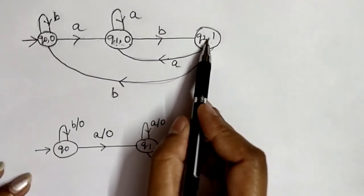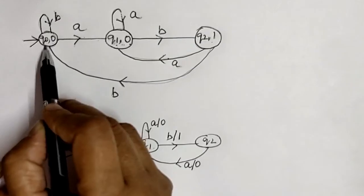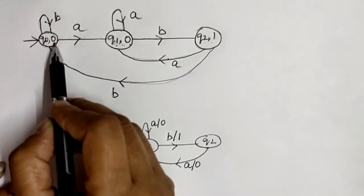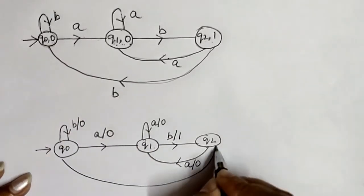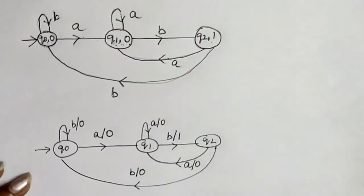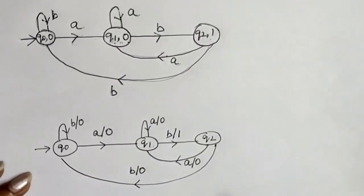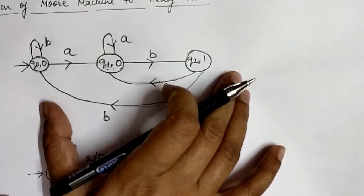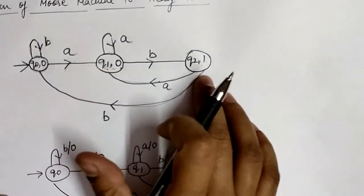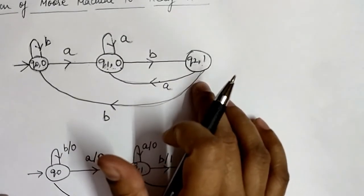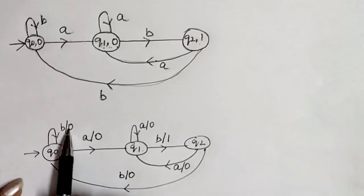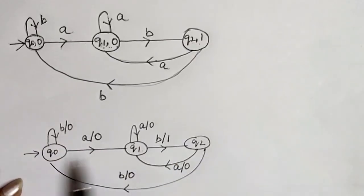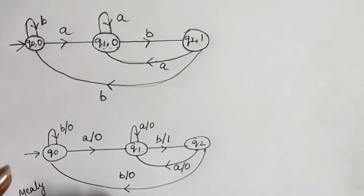For Q2 with input A: it is associated with output 0. For Q2 with input B: it moves to state Q0, which is associated with output 0, so this 0 output is associated with input B from Q2. In the first diagram the output was associated with the state — that's why it was a Moore machine — but now the output is associated with all the inputs, not with the state, therefore this is a Mealy machine.